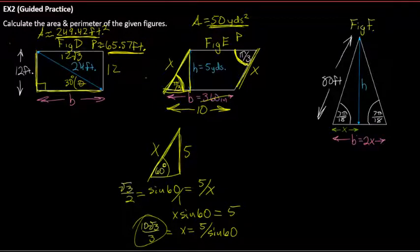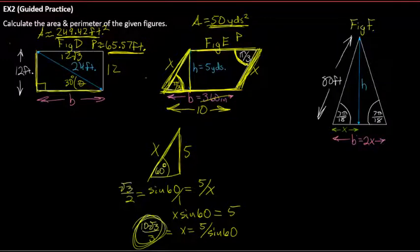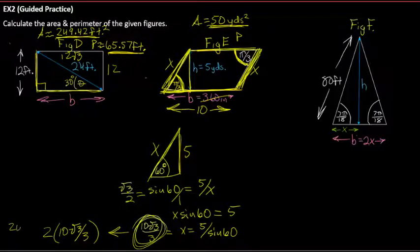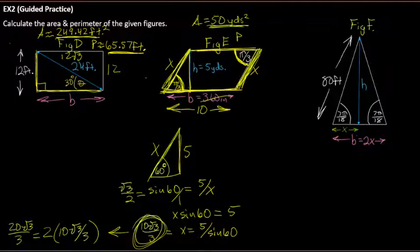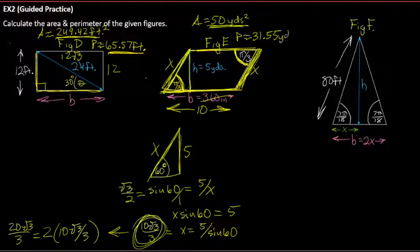To calculate perimeter: x + x + 10 + 10, which is 20 + 2·(10√3/3) = 20 + 20√3/3. Entering that into the calculator: 20 times √3 divided by 3 plus 20 gives a perimeter of approximately 31.55 linear yards.